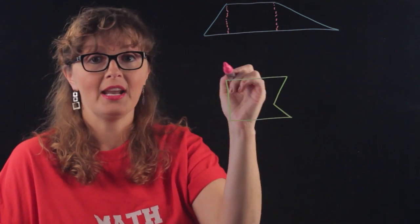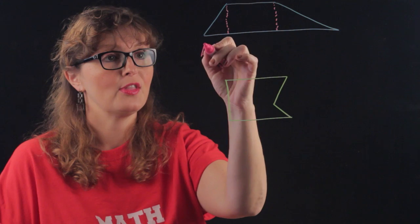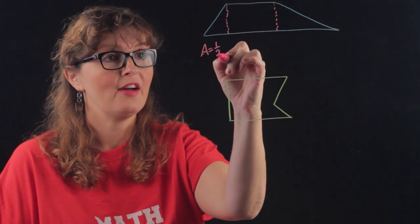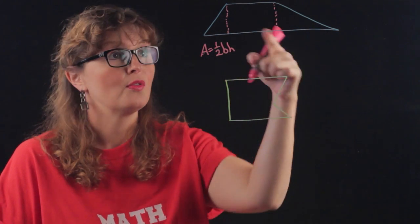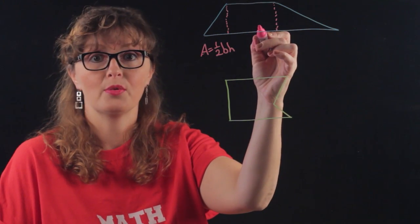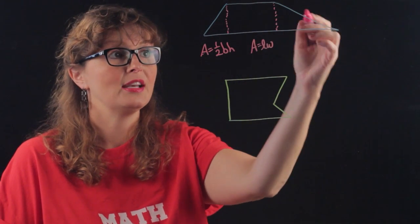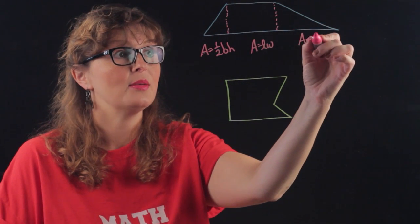If you remember that your area is one-half base times height for the two triangles, and the area of the rectangle is length times width, then you can find each area and add them together.